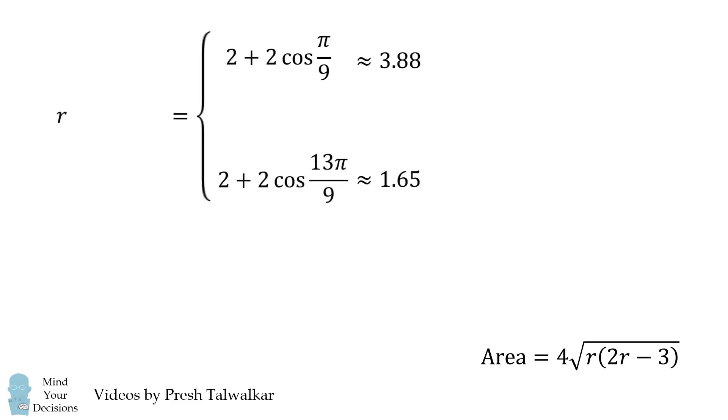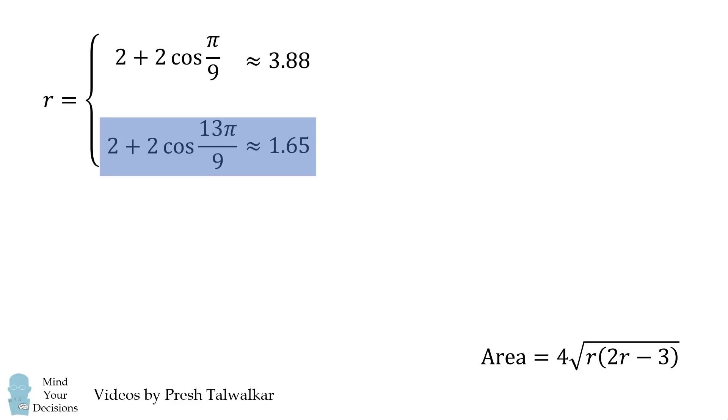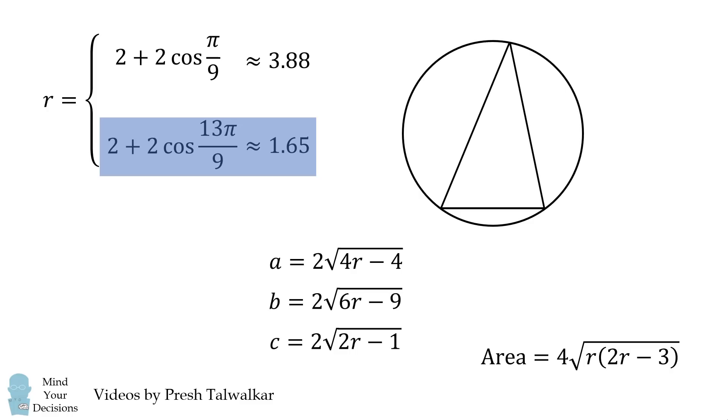We thus go to the following two values. Now the second possibility, that's approximately 1.65, will lead to the following values for the sides, which will be the following construction. And if you work out the perpendicular bisector lengths, you end up with the following case, which was different from the original problem. So this again is not a solution to the problem.